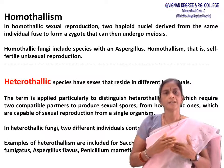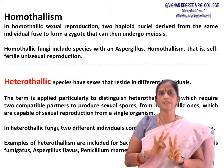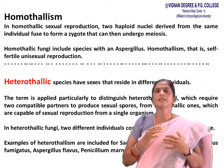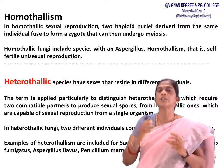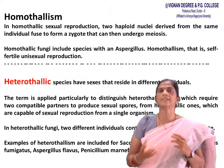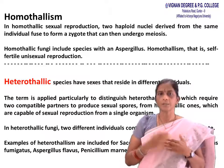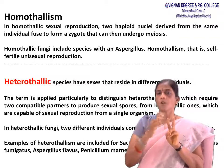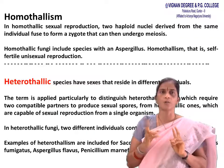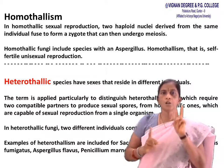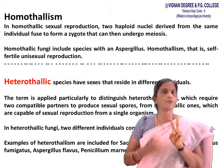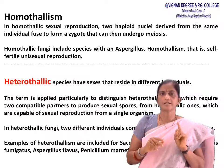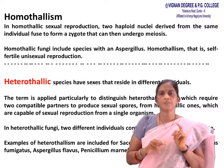Coming to heterothallism — species have sex that resides in different individuals. Heterothallic fungi require two compatible partners to produce sexual spores, unlike homothallic ones which are capable of sexual reproduction from a single organism. In heterothallic fungi, two different individuals contribute nuclei to form a zygote. Examples: Saccharomyces cerevisiae, Aspergillus fumigatus, Aspergillus flavus, Emericella species, Neurospora.